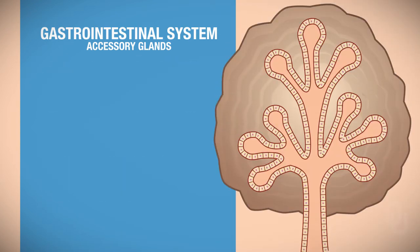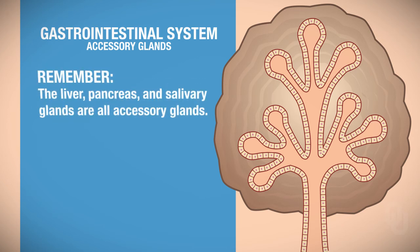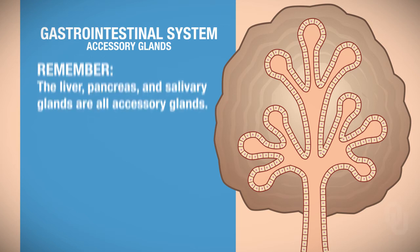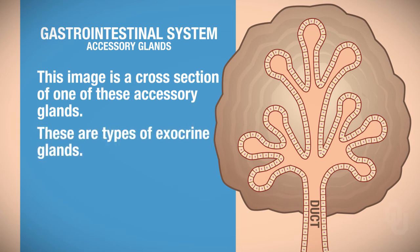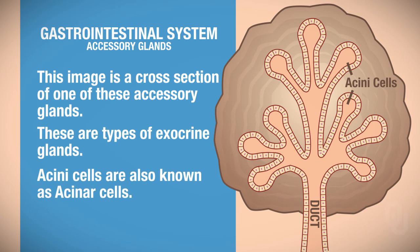Here is the general structure of an accessory gland. The liver, the pancreas, and salivary glands are all accessory glands. In this image, you are looking at a cross-section through one of those accessory glands. Here is the duct associated with these accessory glands. Again, these are types of exocrine glands. They have cells called acinar cells.